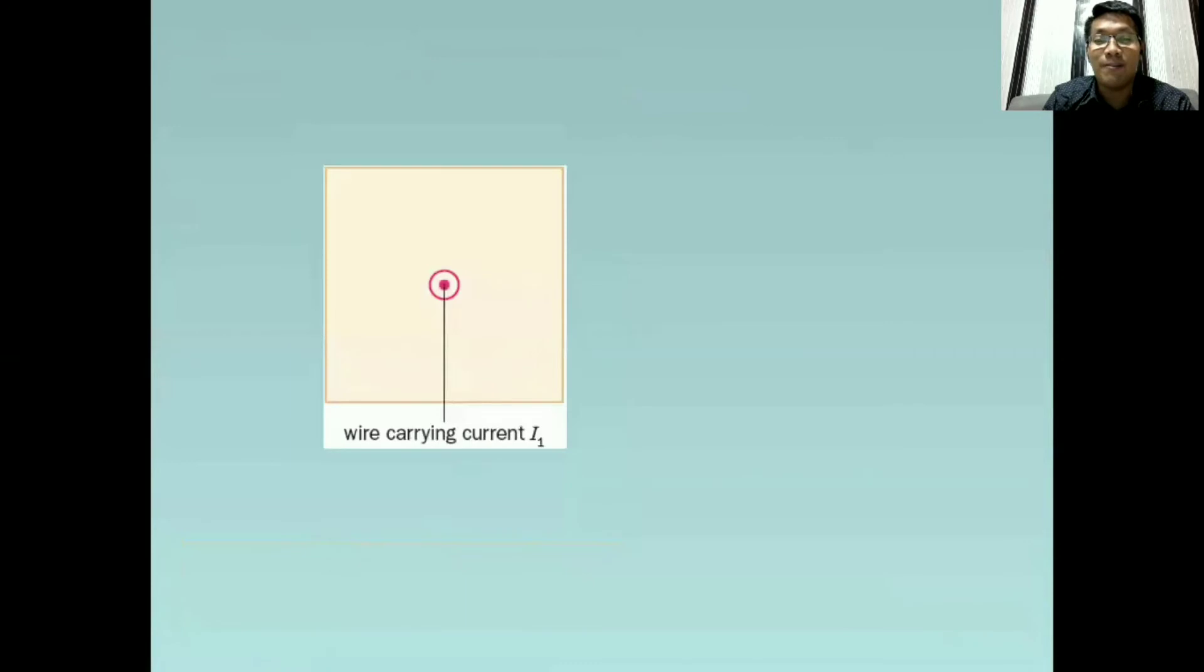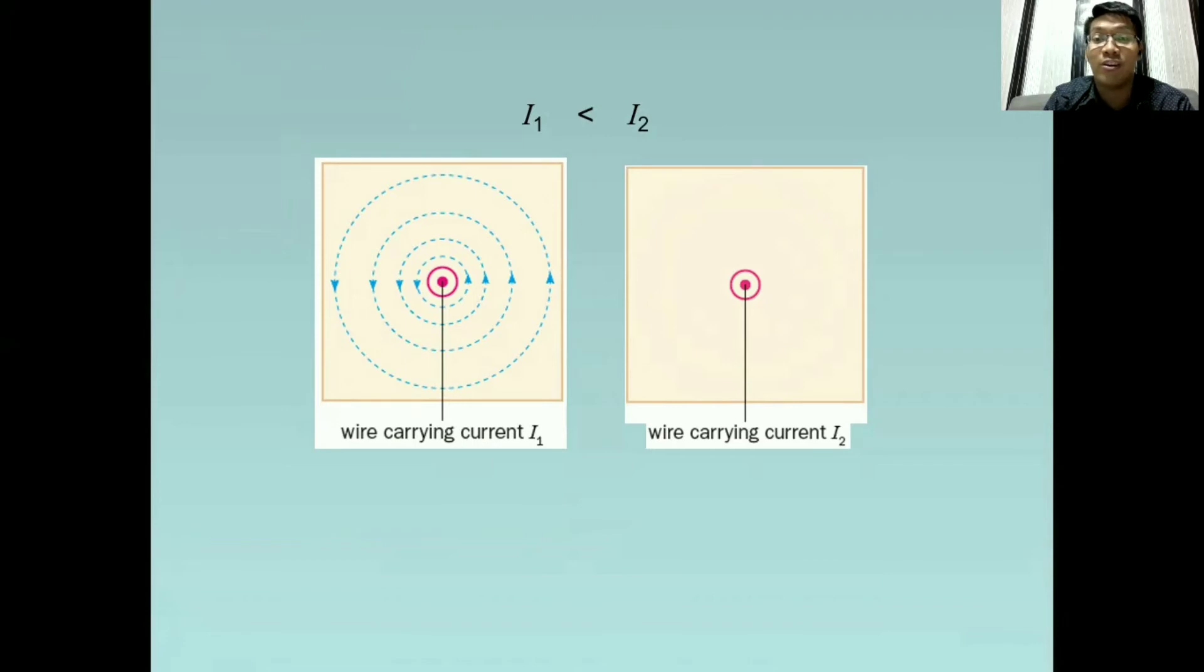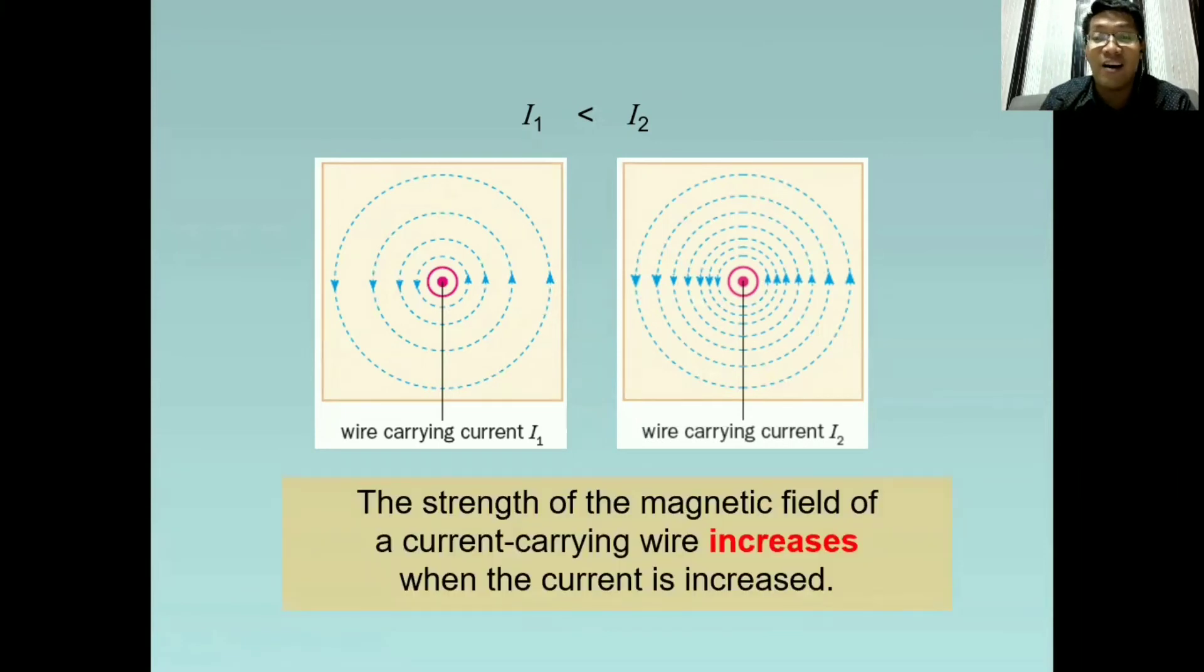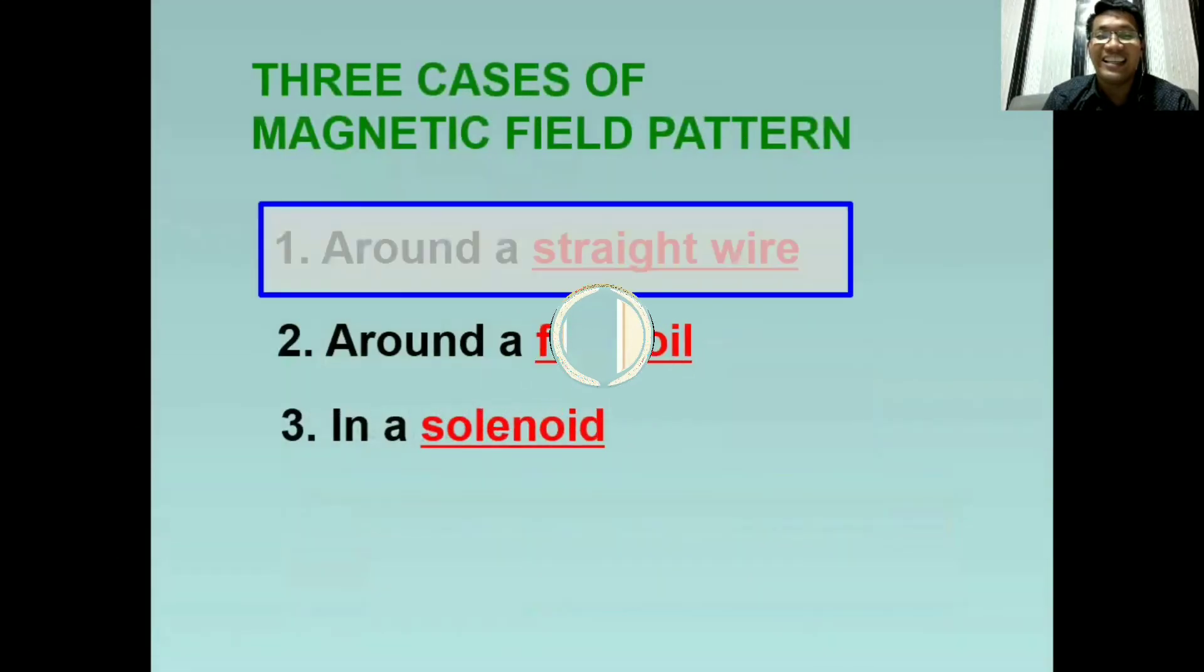Second thing that we have to remember, what if the current is increased? And this is the case. The current of the first wire is lesser than the second wire. And so its magnetic field will look like this. Then for the wire with a stronger current like this, kung naaalala ninyo, pag mas malapit ang concentric circle sa isa't isa or sa bawat isa, mas malakas ang magnetic field. Therefore, we can conclude that the strength of the magnetic field of a current carrying wire increases when the current is increased. Pag mas maraming kuryente na dumadaloy sa isang wire, mas malakas ang magnetism neto or magnetic field neto.